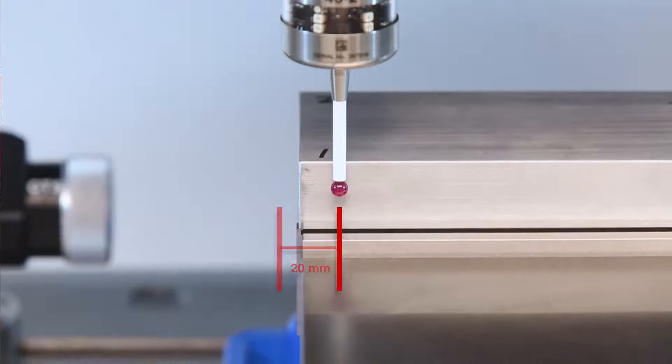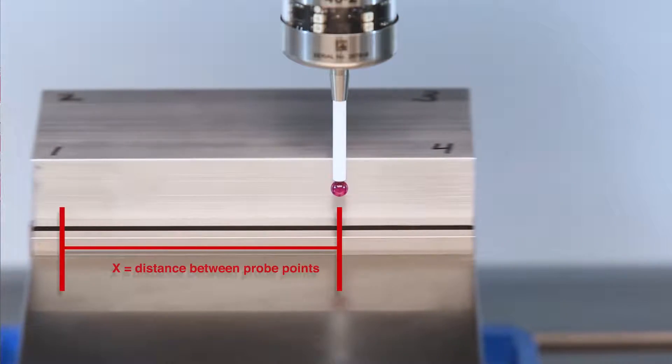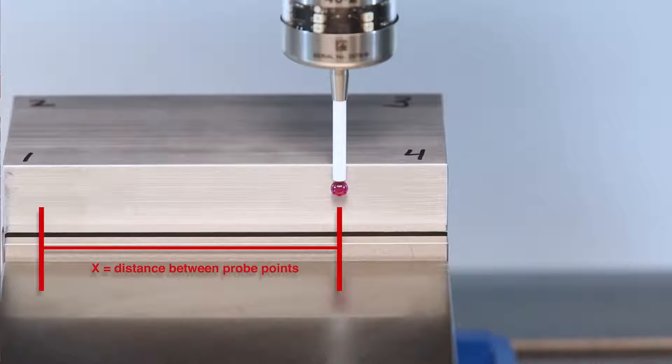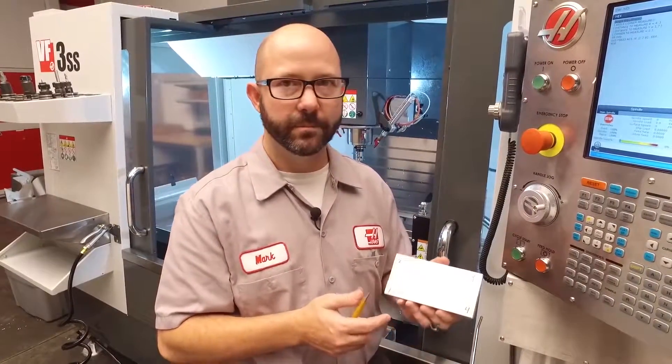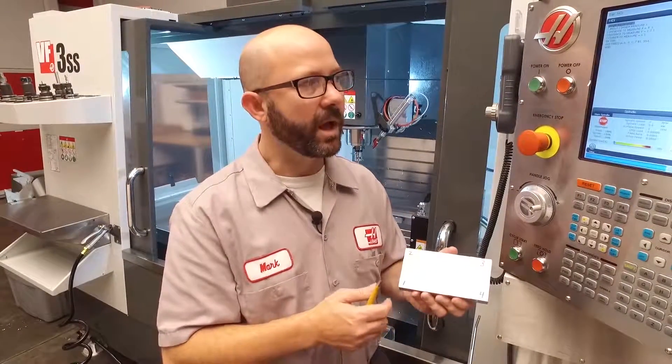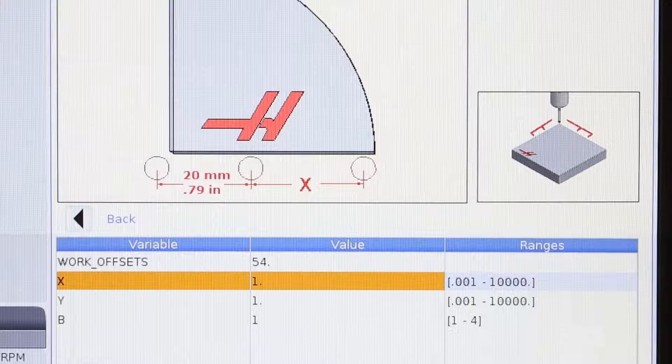Then it's gonna move some other distance. How far is the machine gonna go between the first and the second hit points along this X axis? That's what we're filling in here. This is a six inch part. I'm gonna go ahead and enter four inches.